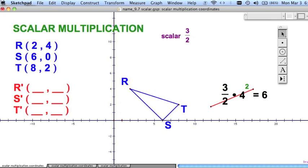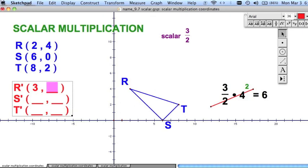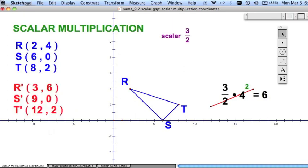Now that you know that, what's 3 halves of 2? That's going to be 3. 3 halves of 4, we just did that. That's 6. 3 halves of 6, that's going to be 9. 3 halves of 0 is 0. 3 halves of 8 is 12. 3 halves of 2 is 3. Looks good so far.